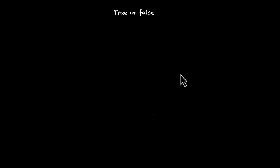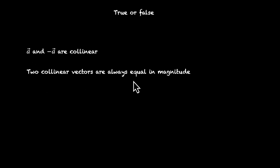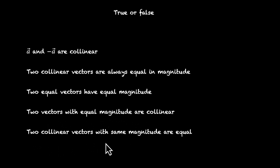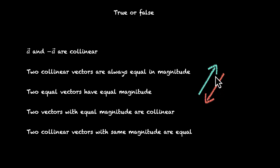Now let's practice. Here are five true or false statements. First: A vector and minus A vector are collinear. Yes — if this is A vector and this is minus A vector, which means it's facing the opposite direction with the same magnitude, they are collinear, because collinear requires facing the same or opposite direction. Opposite also works. So this is true. Second: two collinear vectors are always equal in magnitude. Not necessarily — they can be facing the same direction but one has a larger magnitude. So this is false.